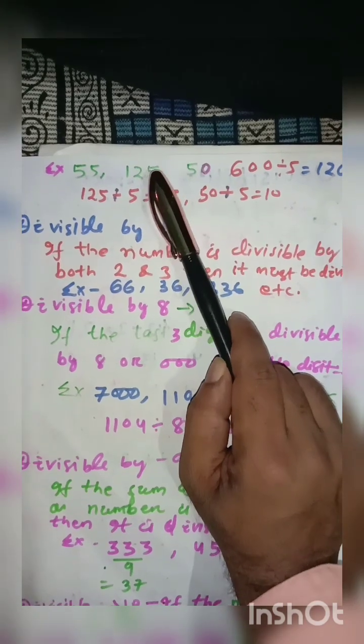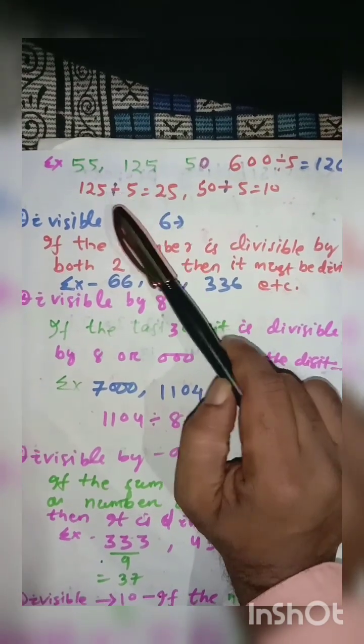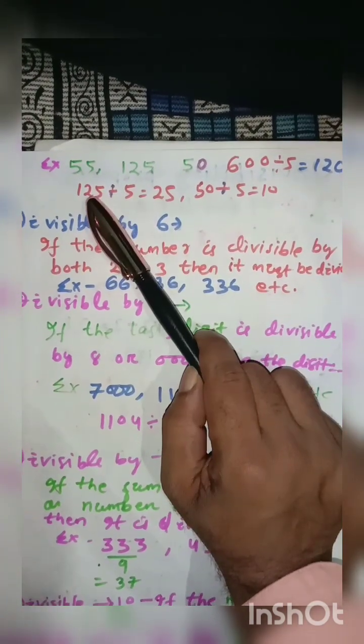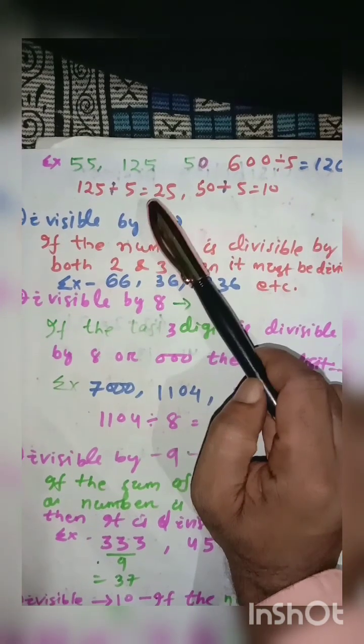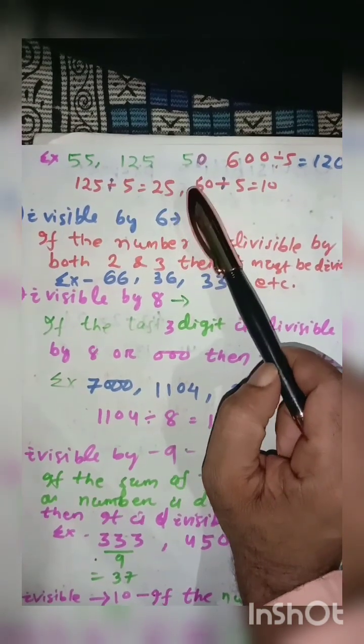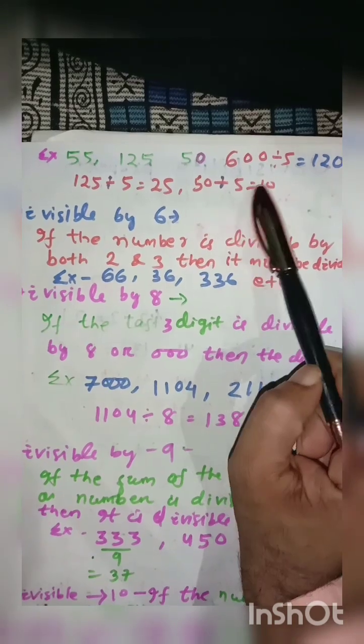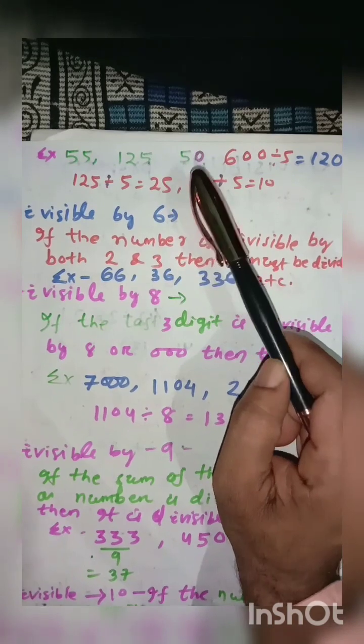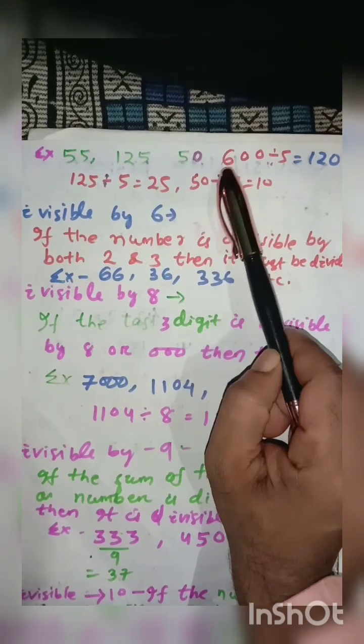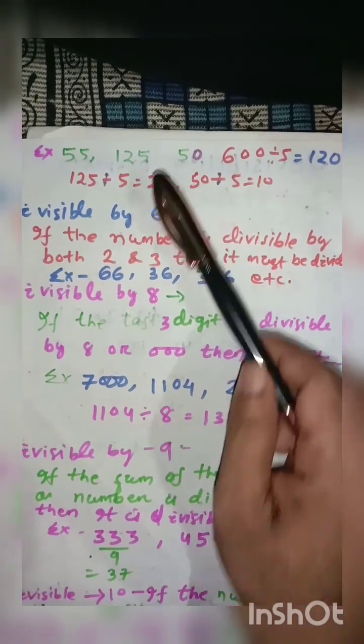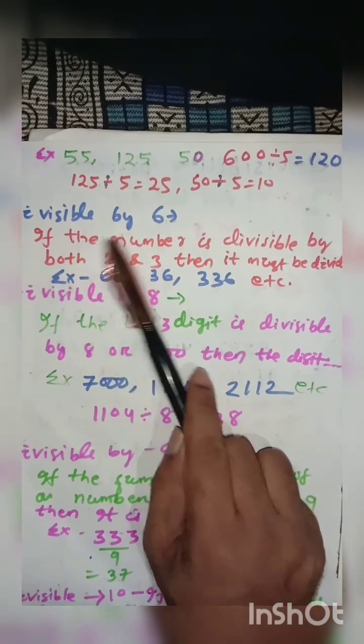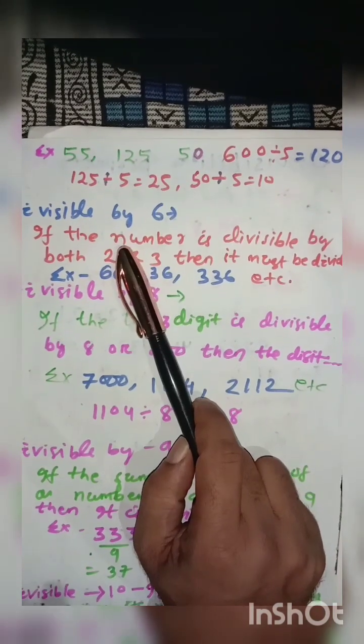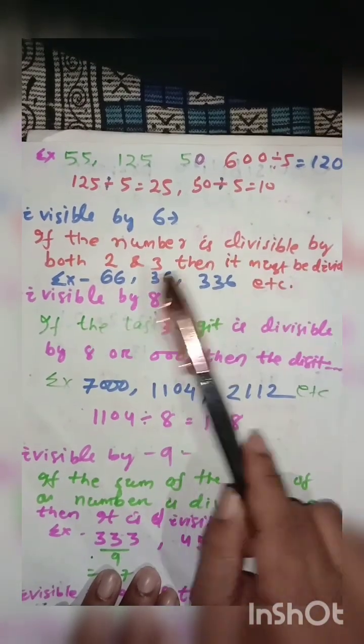125 has 5, it is also divisible by 5. So if you divide 125 by 5, you will get 25. 50 also comes in the 5 table. In this way you can know, you can be sure, which number is divisible by 5 or not.